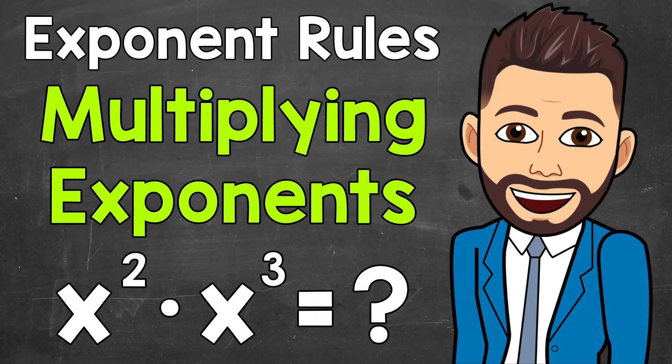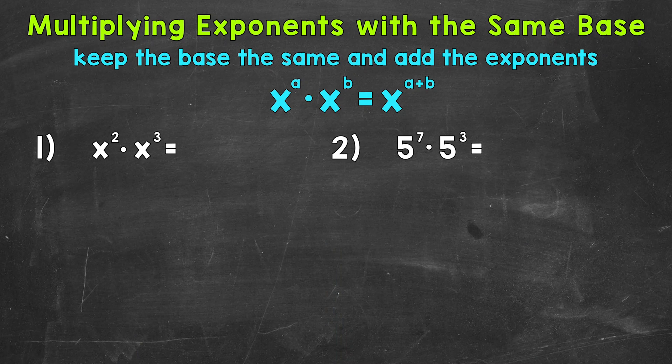Welcome to Math with Mr. J. In this video, I'm going to cover multiplying exponents with the same base. When we do this, we keep the base the same and then add the exponents. For example, x to the power of a times x to the power of b is going to equal x to the power of a plus b. Let's jump into our examples and see exactly how this works.